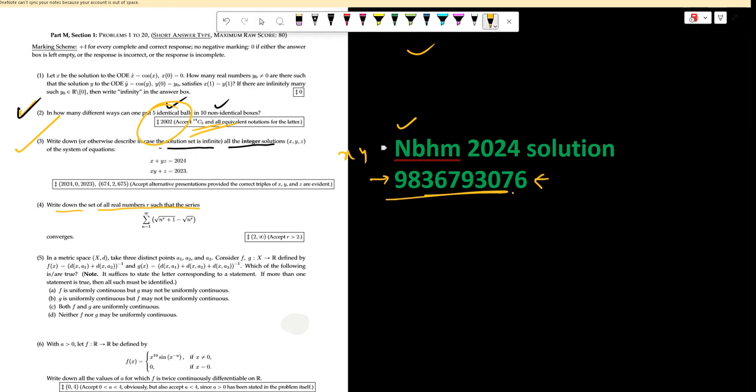Hello dear students, today we are solving NBHM 2024. A matrix space is given: a1, a2, a3, ..., an. f(g(x)) is defined by this expression, and g(x) is also given.